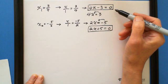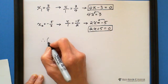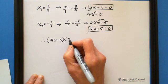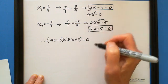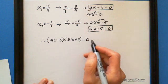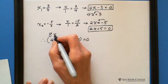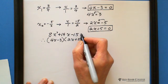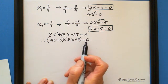Because 4x minus 3 equals 0 and 2x plus 5 equals 0, when these two multiply together we get 4x minus 3 multiplied by 2x plus 5 equals 0. This is the factored form of 8x squared plus 14x minus 15 equals 0.